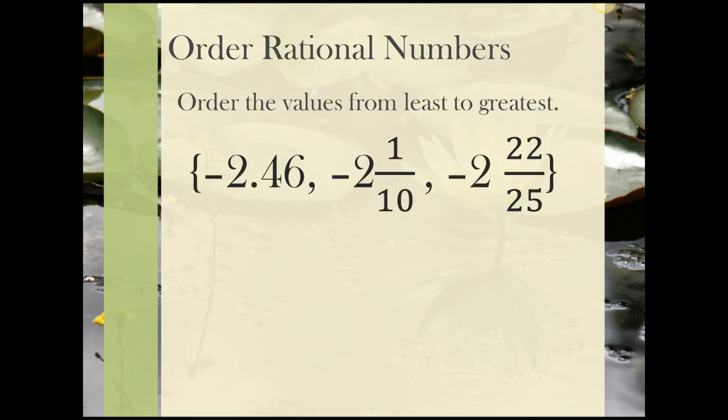Next, let's order these values from least to greatest. They are all negative, so we're going to need to convert all of them to a common format. Probably the easiest thing to do is convert them all to decimals. Otherwise, we'd have to find a common denominator for all of the fractions and make those conversions. -2.46 is already a decimal, so that one's fine. We would end up with -2.1, and I'm going to add on a zero, so it's to the hundredth spot, and -2 22/25 becomes -2.88.